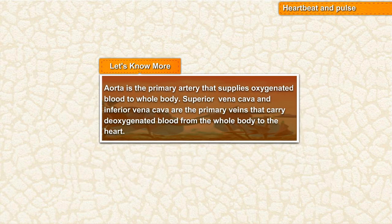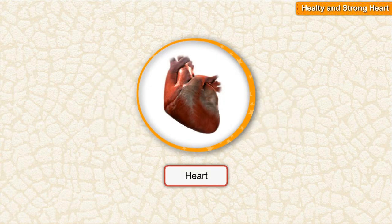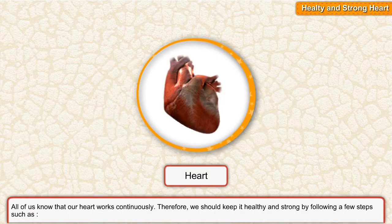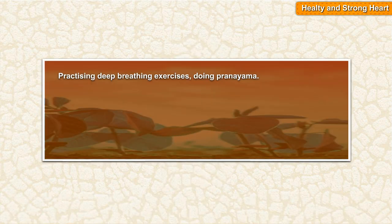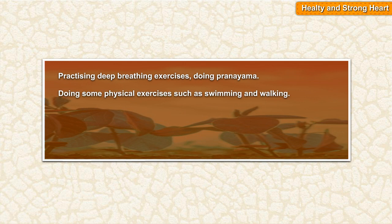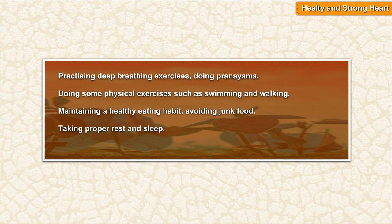The aorta is the primary artery that supplies oxygenated blood to the whole body. We should keep our heart healthy and strong by following a few steps, such as practicing deep breathing exercises and pranayama, doing physical exercises such as swimming and walking, maintaining a healthy eating habit and avoiding junk food.